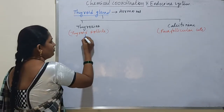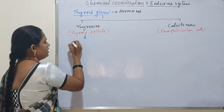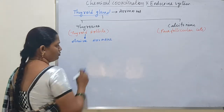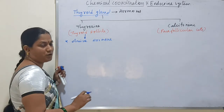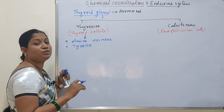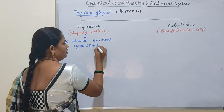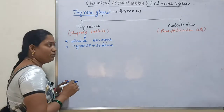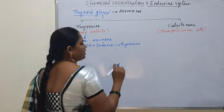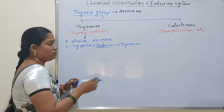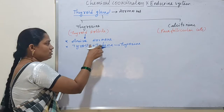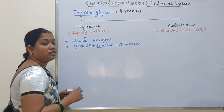Thyroxine hormone is an amine hormone, meaning it is a derivative of a single amino acid — tyrosine. When iodine is added to tyrosine, they bind to form the thyroxine hormone. Therefore, iodine is very essential for the production of thyroxine hormone.